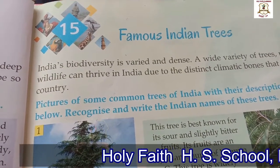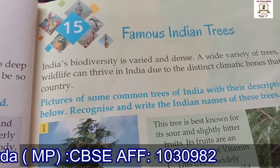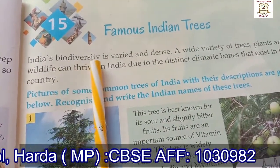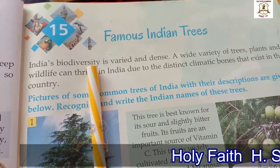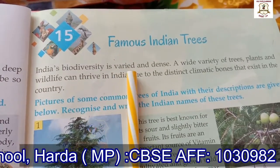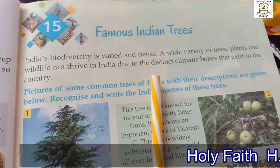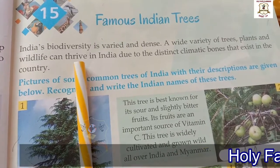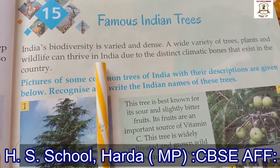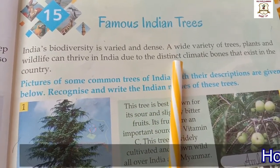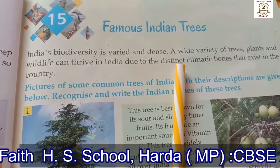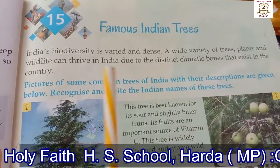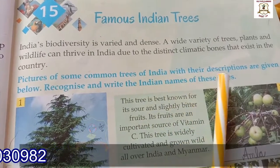Good morning dear students, welcome to today's GK session. Today we will start our new lesson — Lesson 15: Famous Indian Trees. Let's read about India's biodiversity. The variety of plant and animal life in the world is varied, meaning a number of different types of elements. Dense means thick. A wide variety of trees, plants and wildlife can thrive — meaning grow or develop well — in India due to the distinct, meaning different, climatic zones with different climates that exist in the country.